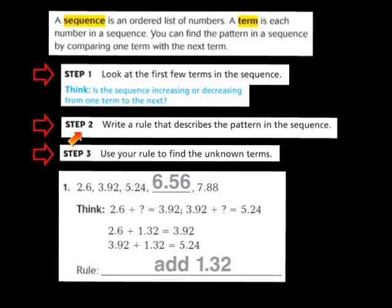Step 2 says: write a rule that describes the pattern in the sequence. I'm going to analyze the first few terms to figure out the difference between them. So, 2 and 6 tenths plus what number gives me 3 and 92 hundredths? I take 2 and 6 tenths away from 3 and 92 hundredths, and when I work that subtraction, I'm left with 1 and 32 hundredths. So between each term in this sequence, we're increasing by 1 and 32 hundredths — meaning we're adding 1 and 32 hundredths. That becomes my rule.